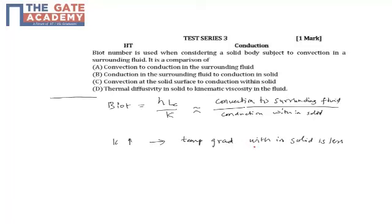It cools uniformly or heats up uniformly, and there is a point where Biot number is theoretically zero. Biot number is zero when K tends to infinity. That will be the ideal case of lumped analysis.